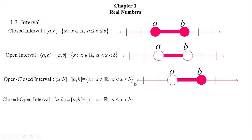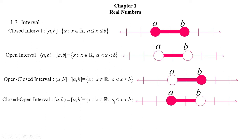Now, what is the closed-open interval? If we consider the set of all real numbers between A and B, including A but excluding B, then that set is known as the closed-open interval. And it can be presented by this number line figure.